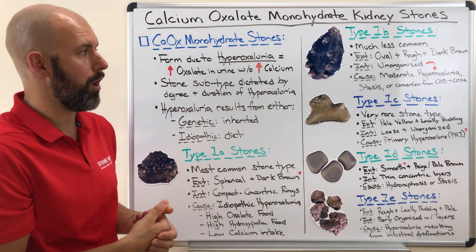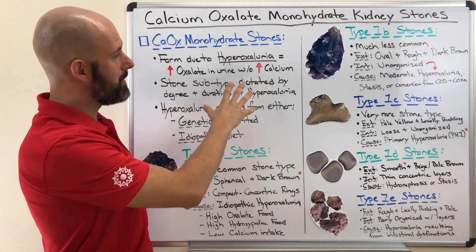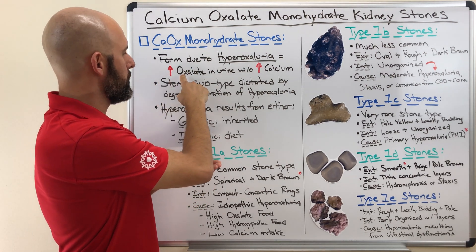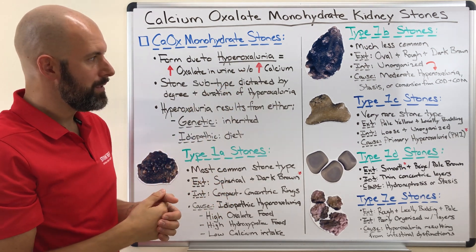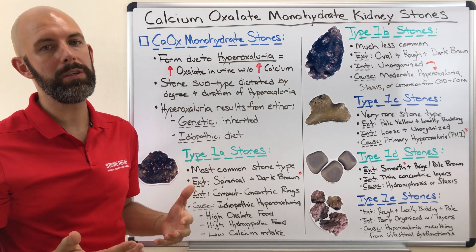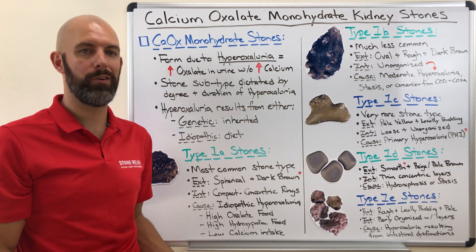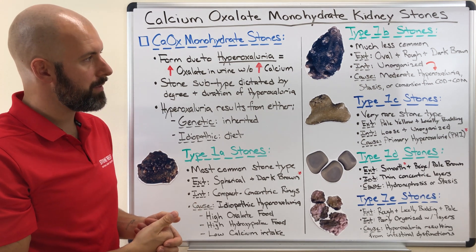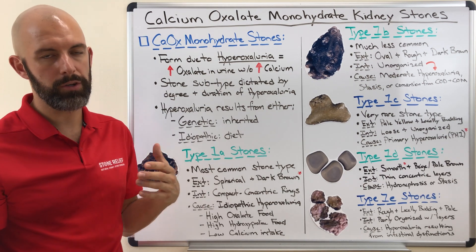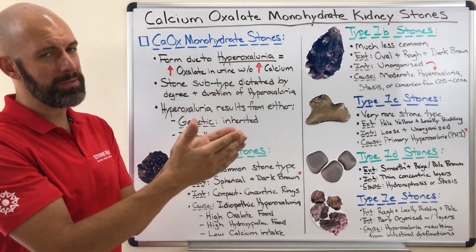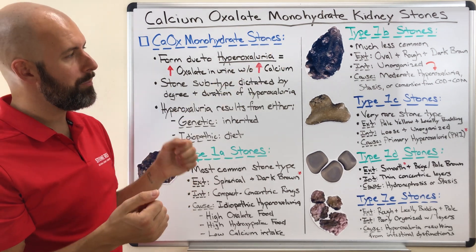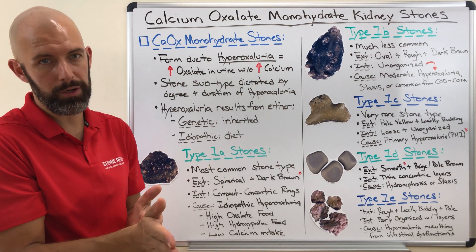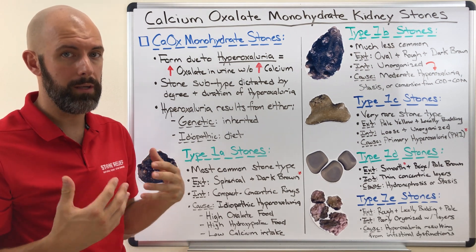These stones are caused by moderate hyperoxaluria — not severe, not very low, just kind of always there, so you're always in an imbalance between oxalate and calcium in your urinary system. Another condition that can lead to this is stasis — if for whatever reason you are unable to fully express your bladder on a regular basis due to some underlying medical condition, you're probably going to be forming type 1B stones. Interestingly, stone types can actually morph depending on what's happening in your body — type 1B stones can sometimes be calcium oxalate dihydrate stones that transition over to a monohydrate type.